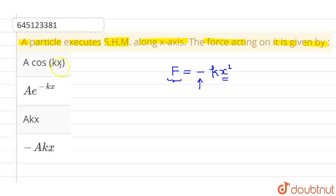So from these options, A cos(kx) cannot be the force because it doesn't depend on whether the displacement is positive or negative, and this particular force is not opposite to the direction of displacement. Therefore, this cannot be the correct force.